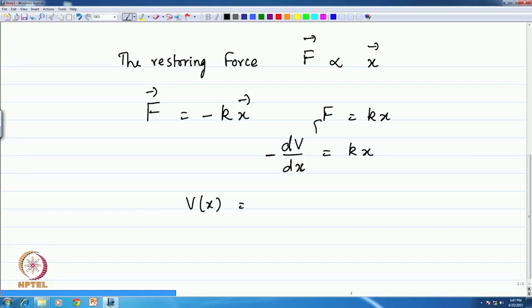Therefore, V(x) is the integral k x dx which gives you k x² by 2 plus a constant.